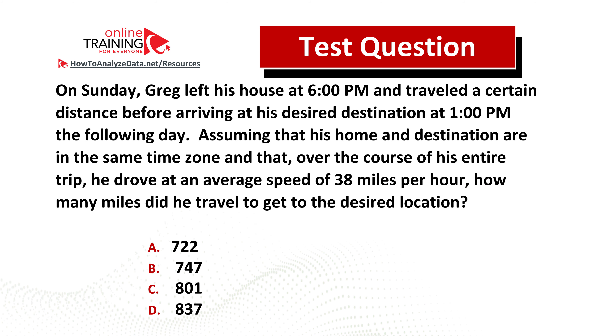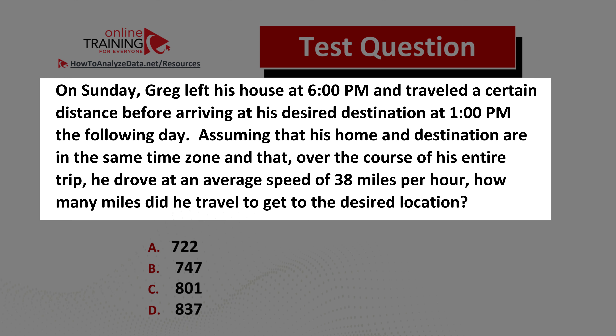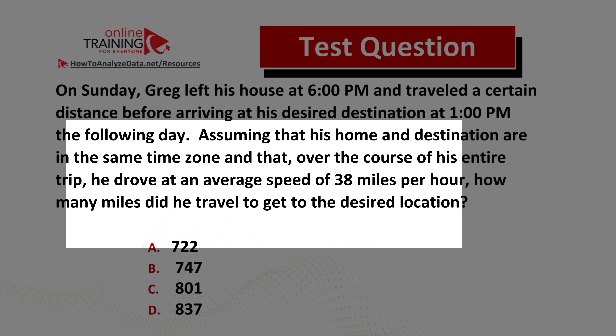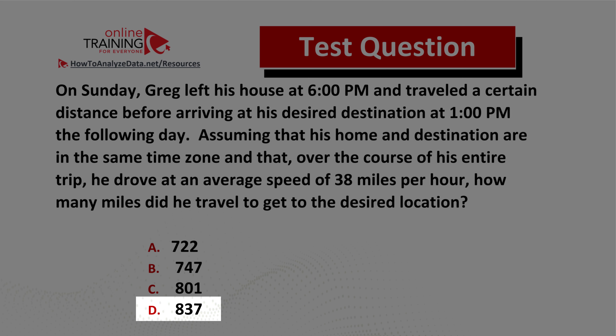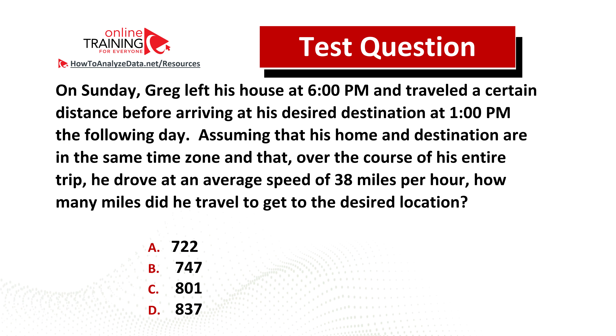Here's a question for you to try: On Sunday, Greg left his house at 6 pm and traveled a certain distance before arriving at his destination at 1 pm the following day. Assuming the same time zone and an average speed of 38 miles per hour, how many miles did he travel? Choices: a) 722, b) 747, c) 801, d) 837. Post your answer in the comments.